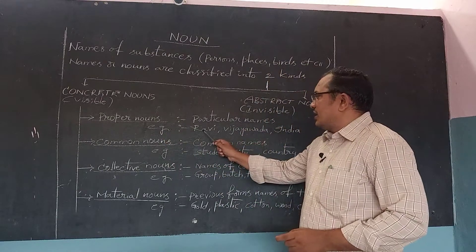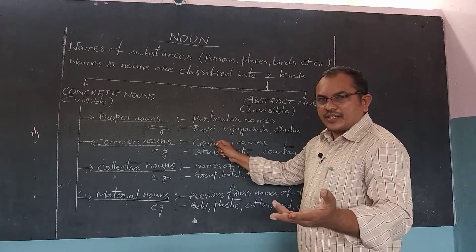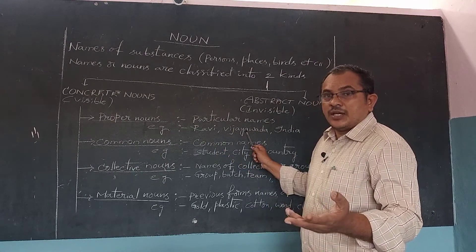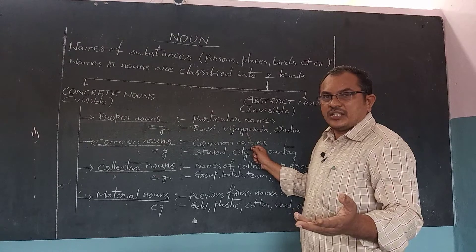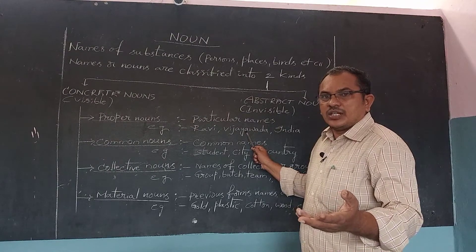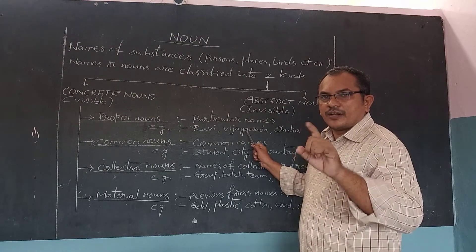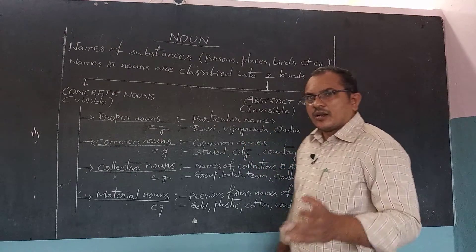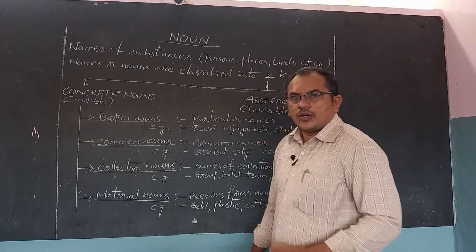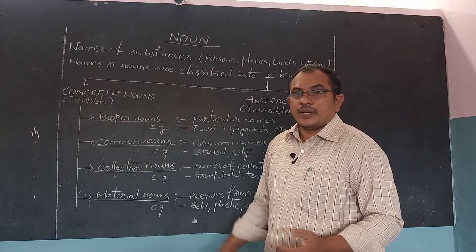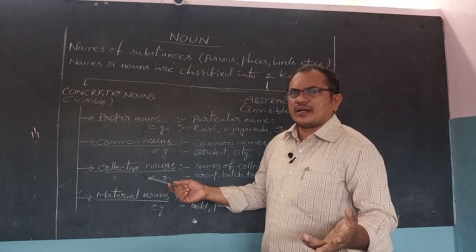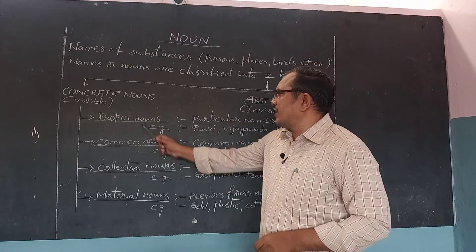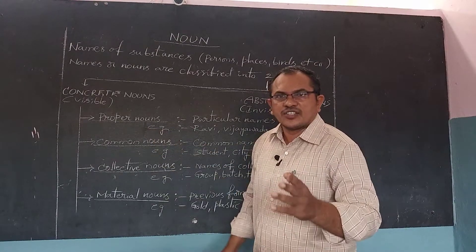Ravi is a particular name of a student. Vijayawada is a particular name of a city. Hyderabad is a particular name of a city. Chennai is a particular name of a city. So many cities, but their particular names are identified as proper nouns. India is a particular name of a country. America is a particular name of a country. Russia is a particular name of a country. Any country's particular name is identified as a proper noun.